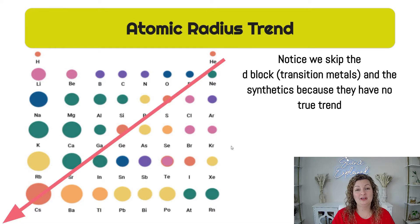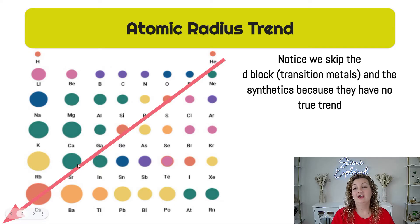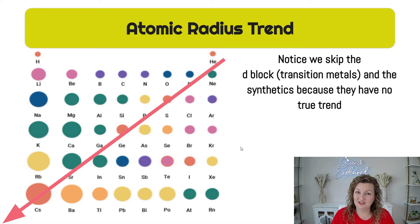We have an atomic radius trend to follow on the periodic table, and you can see it's increasing as we go down and to the left. The smallest elements are going to be found in the upper right-hand corner, and it's going to increase in size as we go down to the bottom left-hand corner where our largest elements are found. Notice we are skipping over the d-block, or those transition metals — they do not really follow this trend, so we're going to be ignoring them for now.